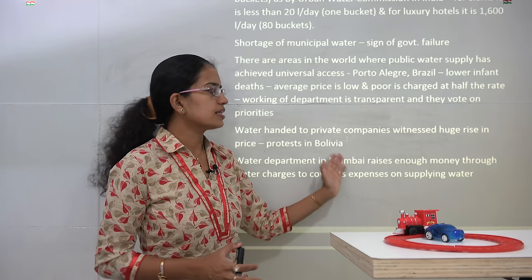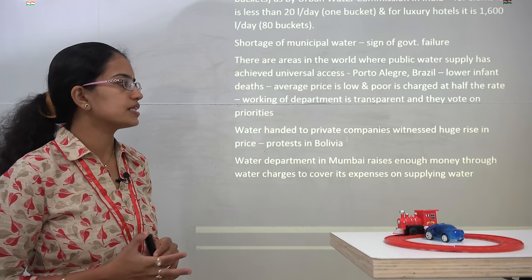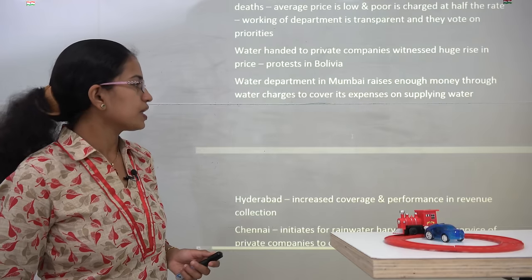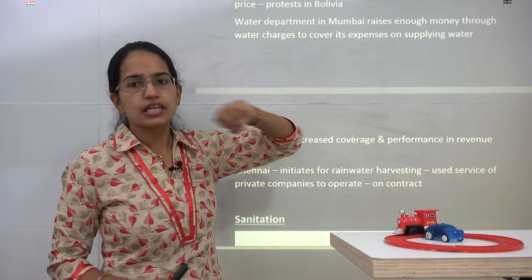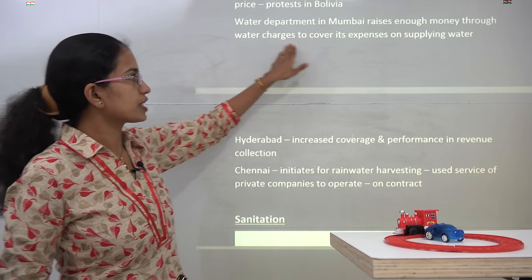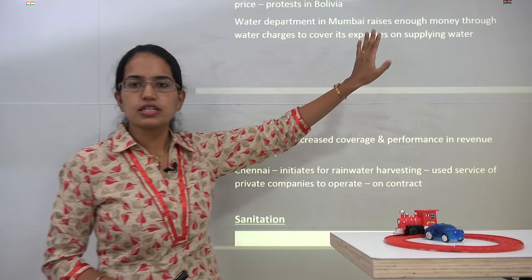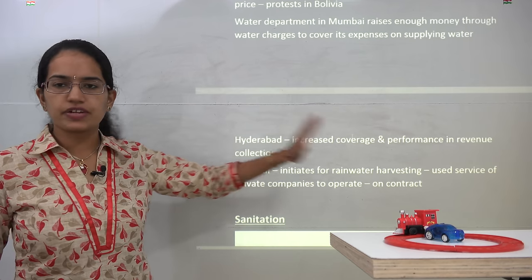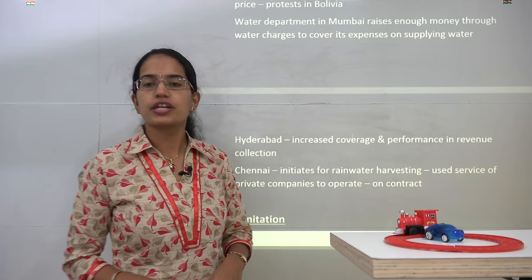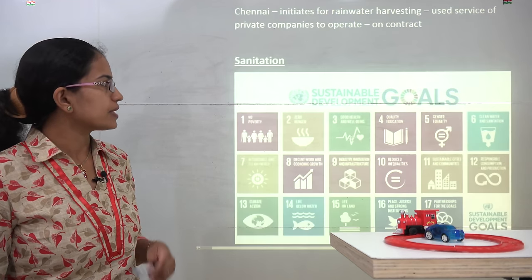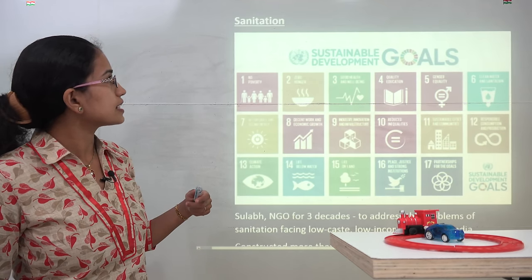In Bolivia, there was a huge protest because most of the water supply was handed over to private companies, which were charging huge sums. In India, there are different examples: in Mumbai, the water department has raised enough money through water charges and is now investing the same money in supply infrastructure. In Hyderabad, the coverage and performance of water supply has increased. In China, there is an initiative for rainwater harvesting and many private companies are operating on a contract basis.